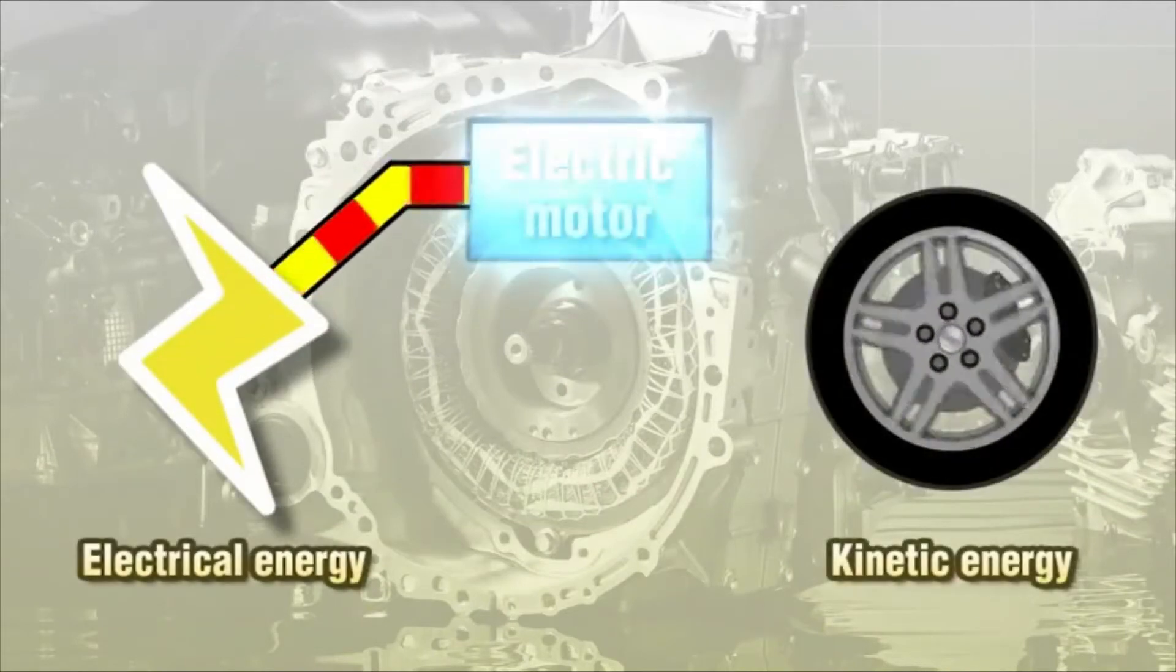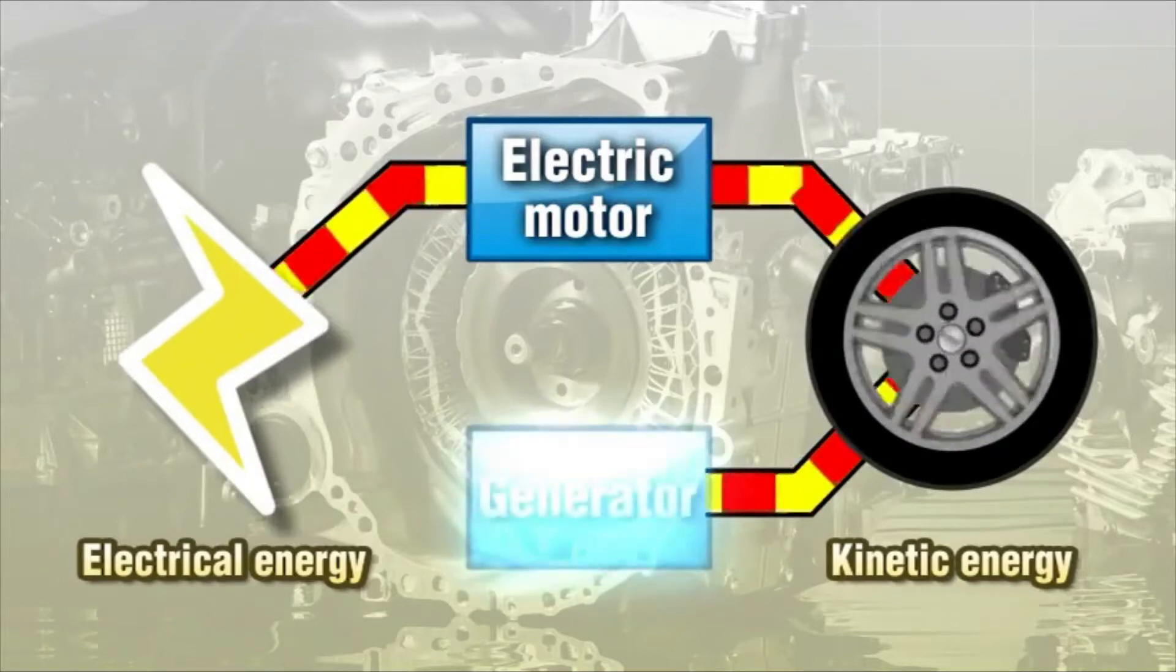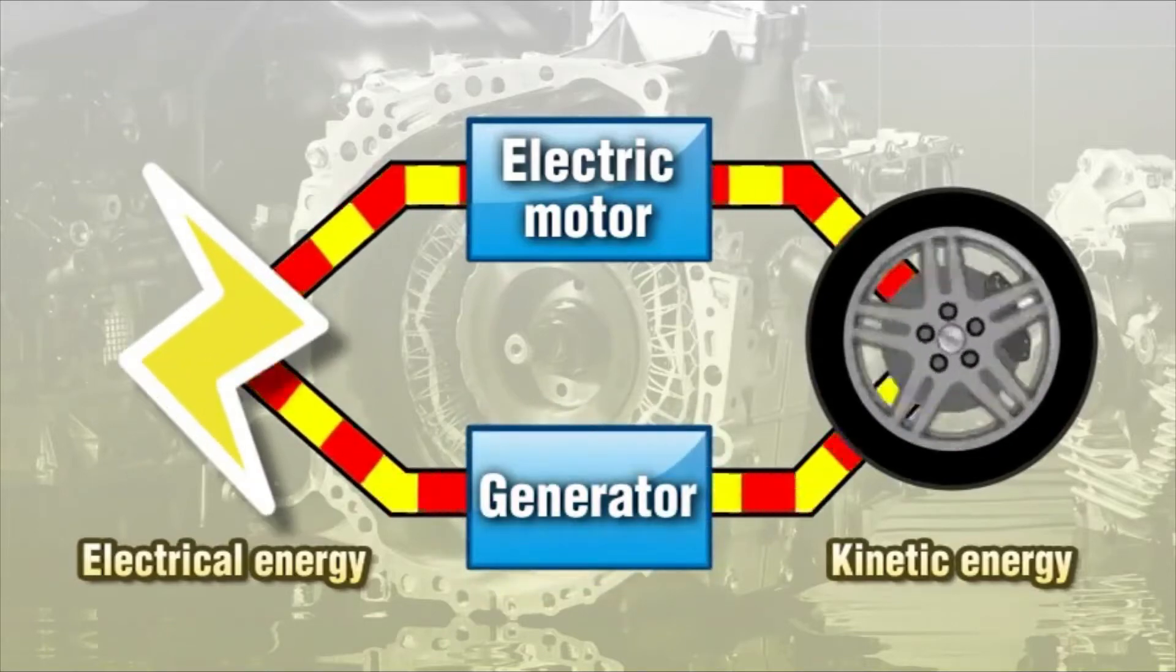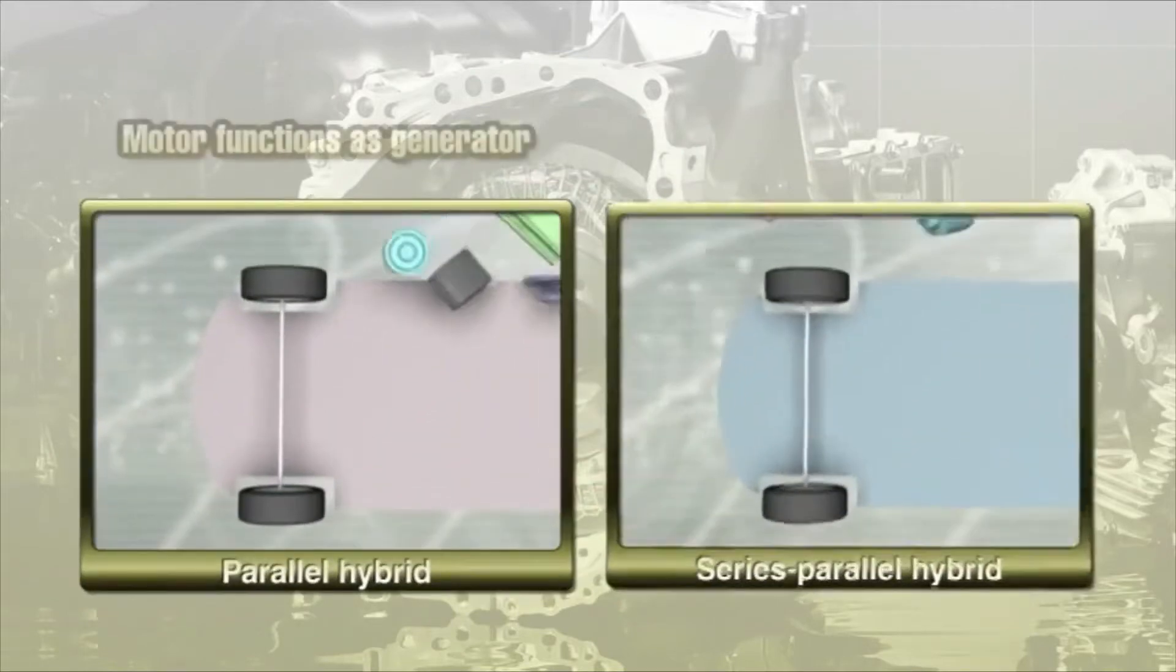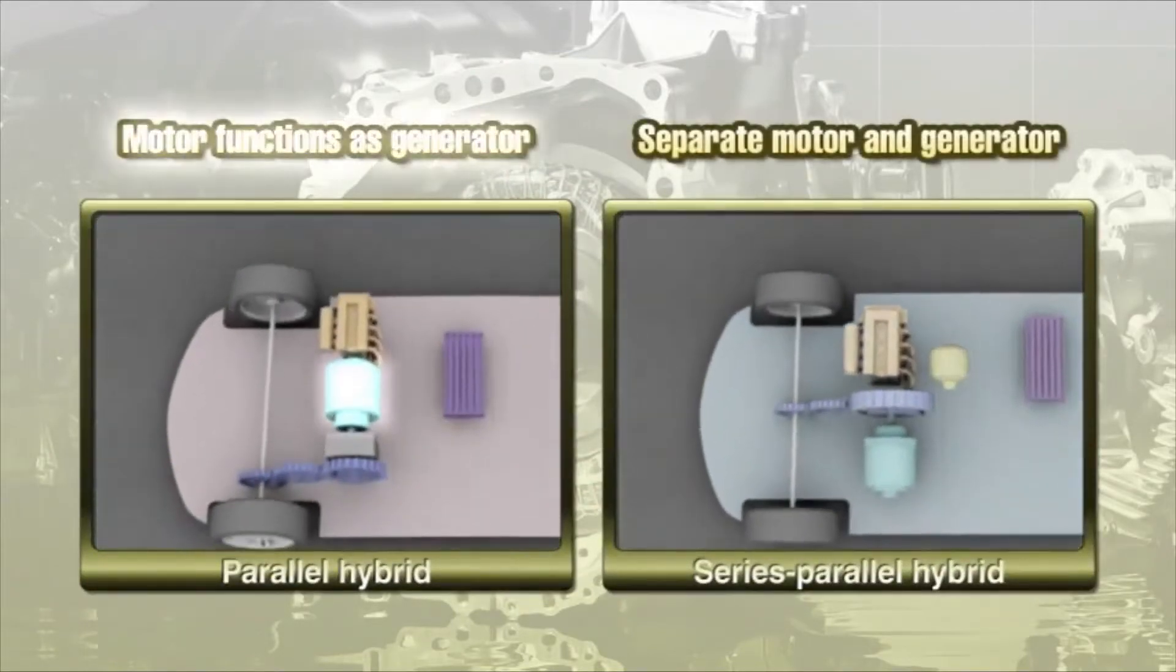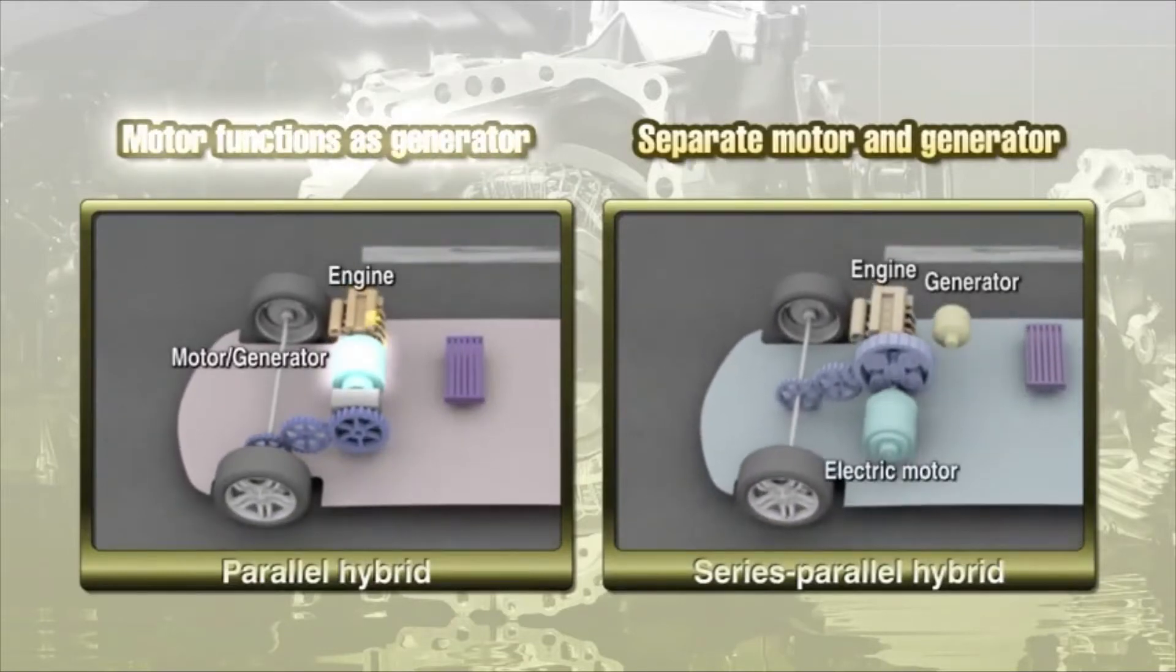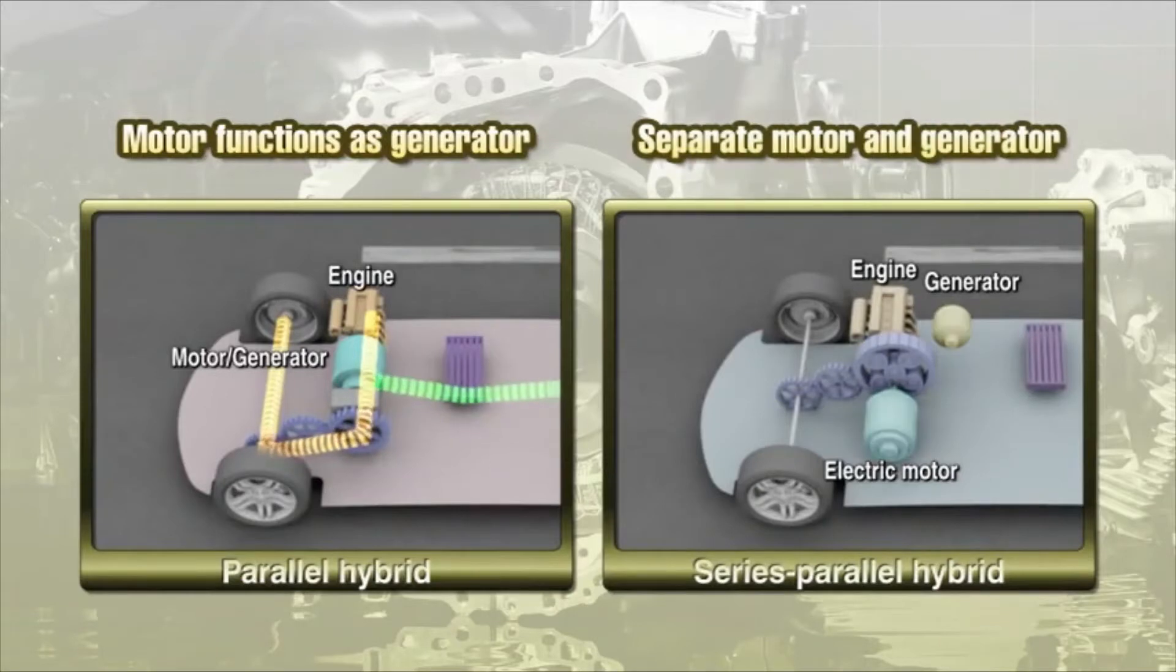An electric motor converts electrical energy into mechanical energy, while a generator converts mechanical energy into electrical energy. A hybrid car requires both the motor and the generator. Some systems combine the two, while others keep the components separate.